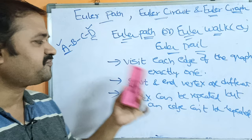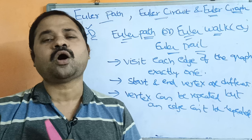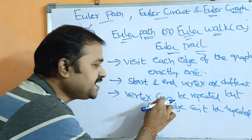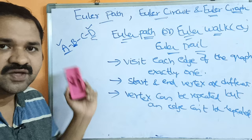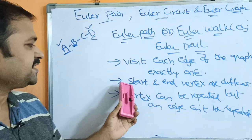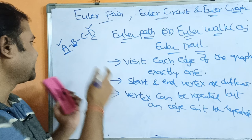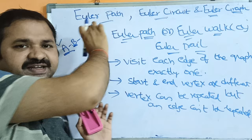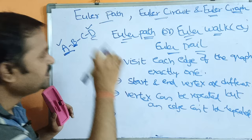Euler path is a path in which we have to visit each edge of the graph exactly once. If the graph contains 10 edges, we have to visit all 10 edges exactly once. We can repeat the vertex — for example, we can visit vertex B several times, there is no problem. But an edge cannot be repeated. The starting vertex and ending vertex are different; if the starting vertex is A, then the ending vertex should not be A.